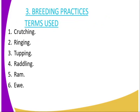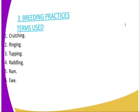Breeding practices — some of the terms which are used: we have number one, Crutching; number two, Ringing; number three, Tapping; number four, Raddling; number five, Ram; and the sixth term is Canvas Apron.